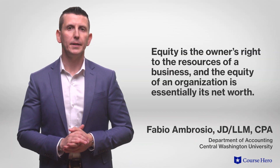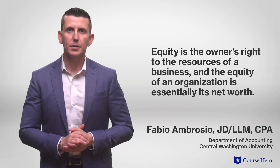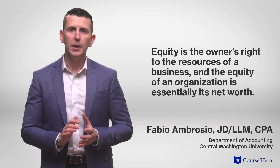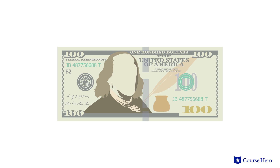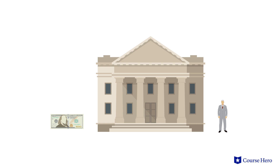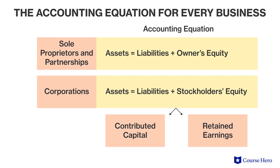Equity is the owner's right to the resources of a business, and the equity of an organization is essentially its net worth. If a corporation has $100 in cash, the liability section of the balance sheet will show how much of that $100 was received from creditors, and the equity section will show how much of that $100 belongs to the owners. For this reason, equity is calculated as the difference between the assets and the liabilities.